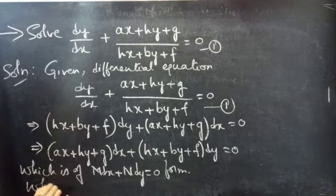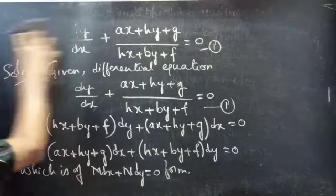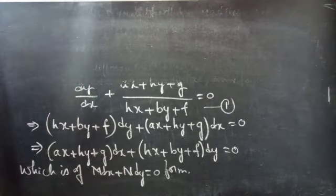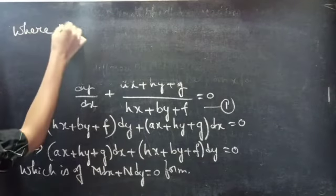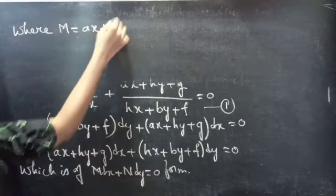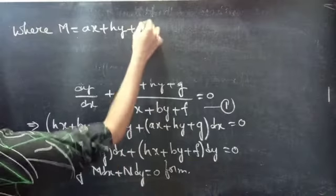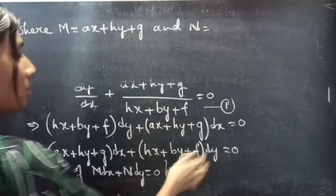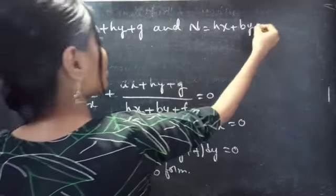Where, by comparing these two expressions, we will get M equals to ax plus hy plus g, and N equals to hx plus by plus f.